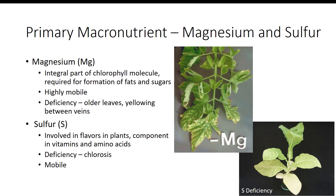Magnesium is an integral part of the chlorophyll molecule and is also required for the formation of fats and sugars. It is highly mobile in plants, and deficiency symptoms typically occur in older leaves with yellowing between the veins. Later, these deficiency symptoms move to the younger leaves. Sulfur is involved in flavors in plants and is also a component in vitamins and amino acids. The main deficiency symptom is chlorotic foliage.